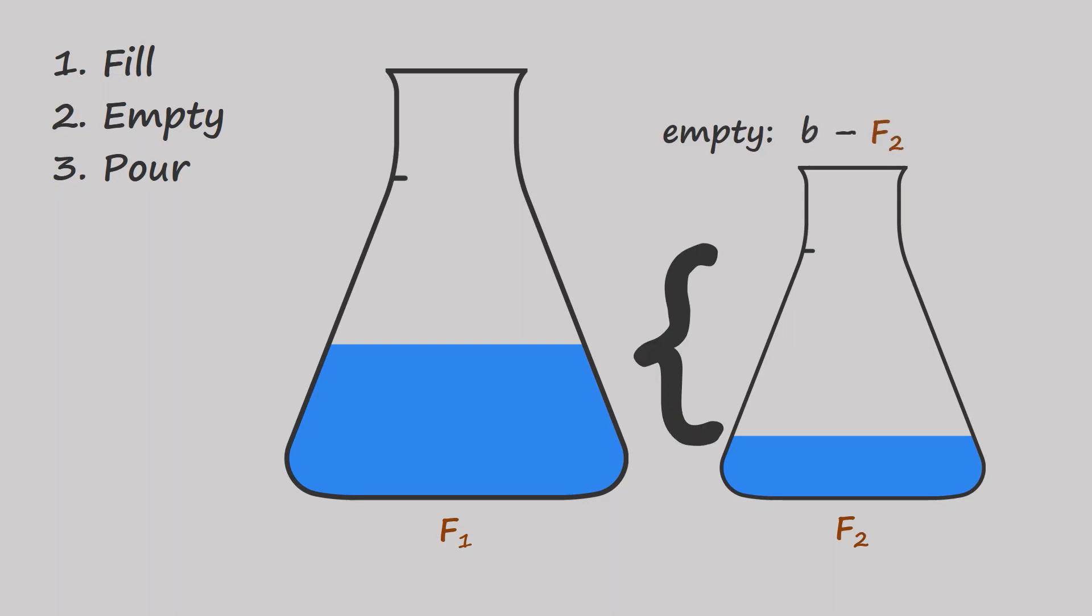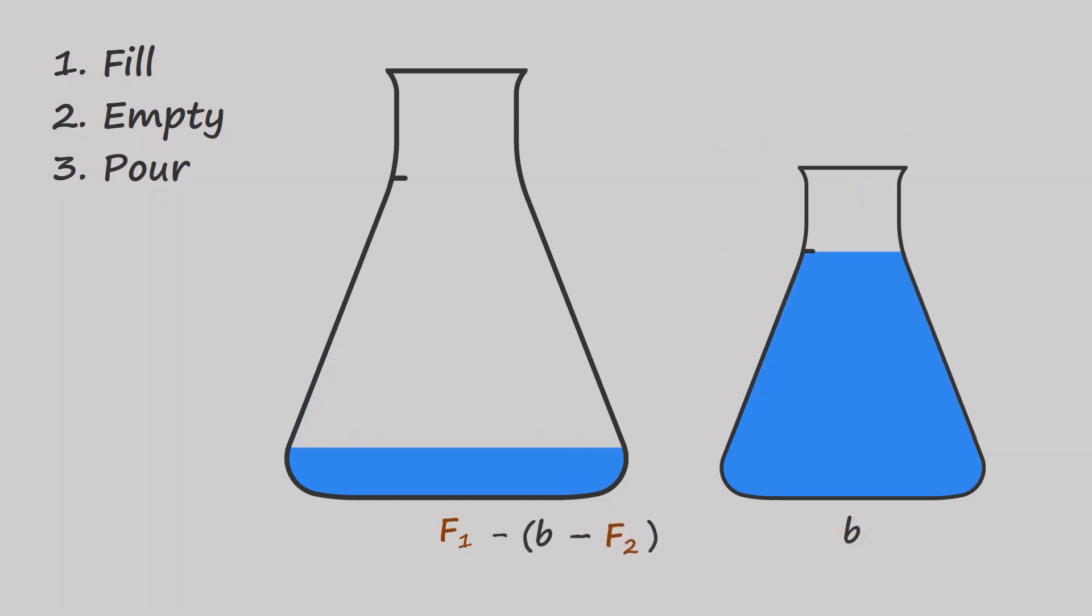That's just the volume of the flask minus the amount of water in it. B minus F2 here. That's the amount that will be deducted from the pouring flask. So the new amount of water in the pouring flask will be this. That's just addition and subtraction of integer linear combinations, which will also be an integer linear combination.